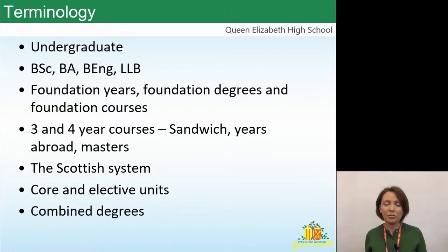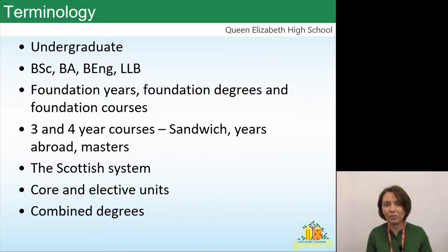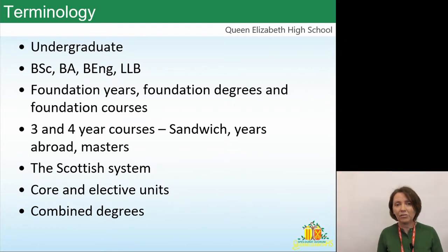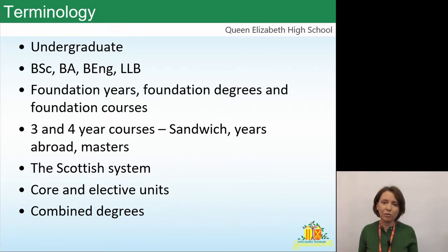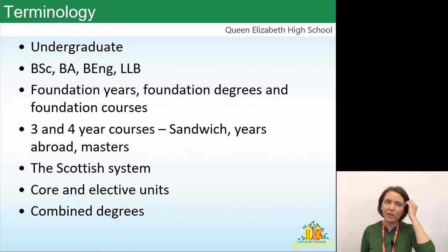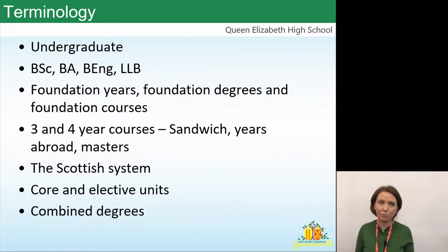There are different types of degrees: BScs, which are science degrees; BAs, arts degrees — and by that it means arts in the broadest sense, so written subjects like English or history would be an arts degree; BEng, engineering degrees; and an LLB is a law degree. If a student comes across terminology they're not sure about, a member of staff will be able to help them — their teacher, the curriculum team, or they can ask for an appointment at any time.